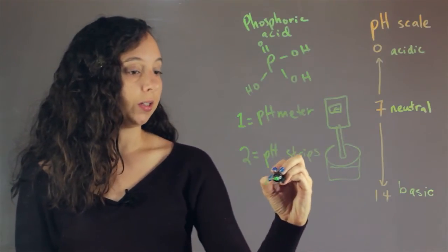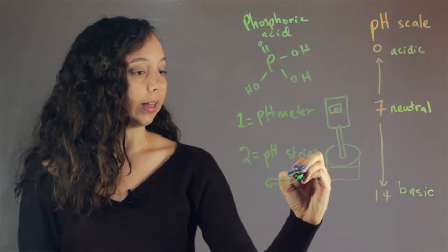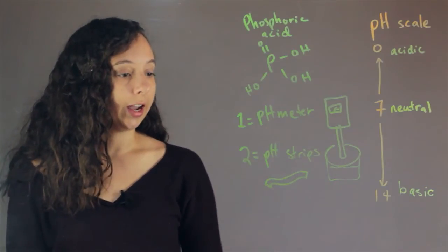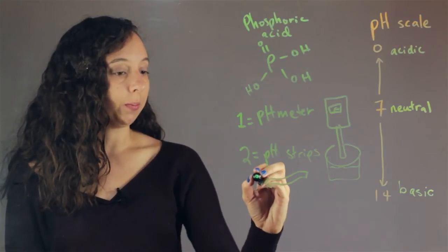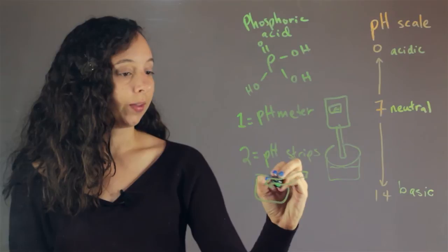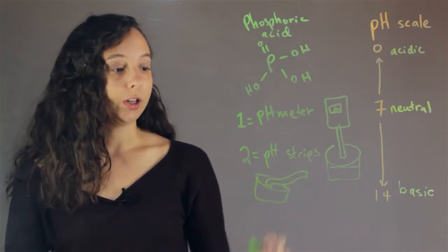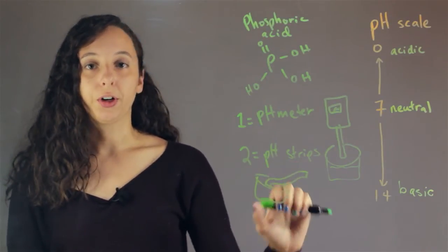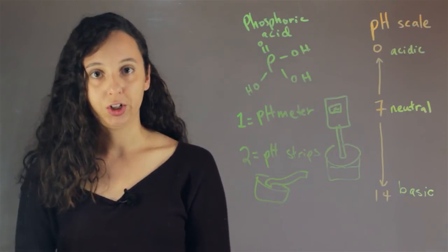So, pH strips are just pieces of paper. They look like that. They're usually orange. And, what happens is that if you dip the pH strip into water, it's a color indicator. So, you dip the pH strip into water, and it will turn a certain color depending on what pH it is.